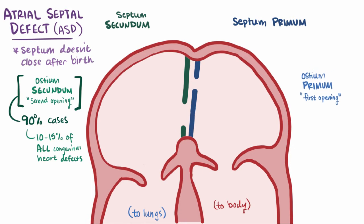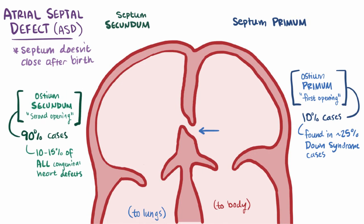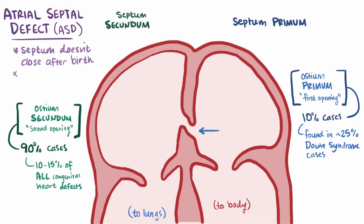10% of ASD cases are due to the ostium primum, where the first opening doesn't make it all the way down, again leaving an opening between the right and left atria. This primum type of congenital defect is found in around 25% of patients with Down syndrome. Atrial septal defects in general are also commonly associated with fetal alcohol syndrome.